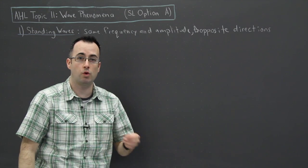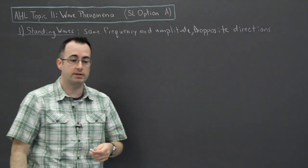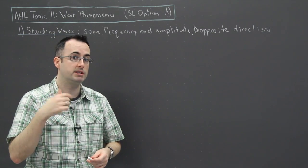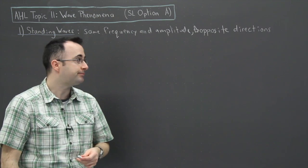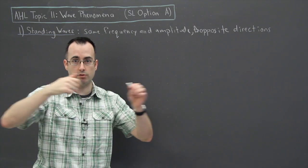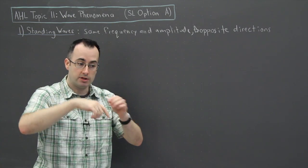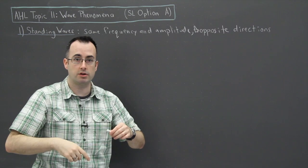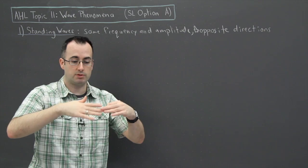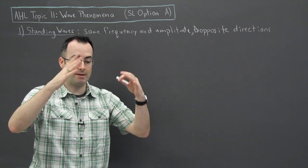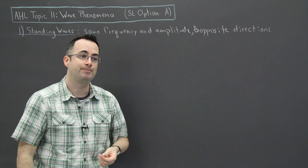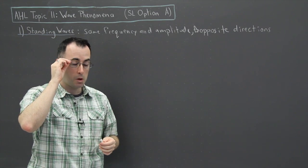Do you remember in the core topic, one of the topics we learned about in waves was about interference. And you can have constructive or destructive interference. What ends up happening is if you have a standing wave, you have two waves going back and forth opposite directions. They're interfering with each other either constructively or destructively. And what ends up happening is you end up with what looks like a vibration in the string. That's kind of interesting because we can use this.